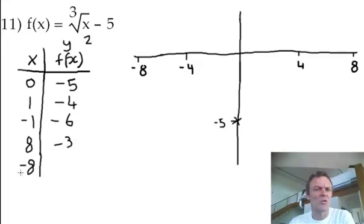When I cube root negative 8, I'll get negative 2. With a negative 5, that's negative 7. I'm just going to plot these points now.